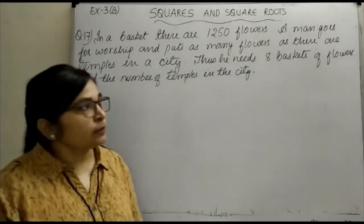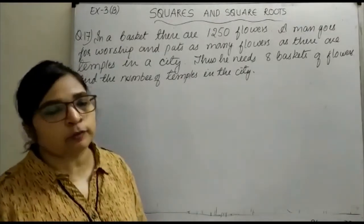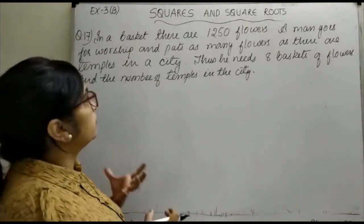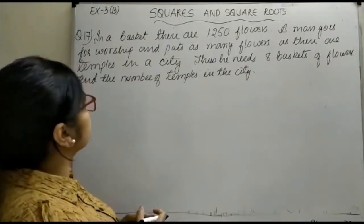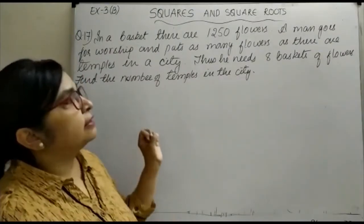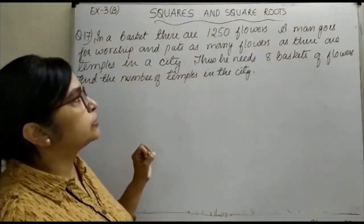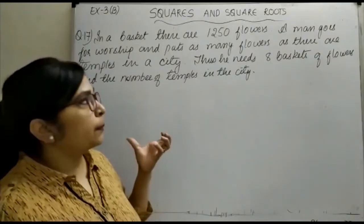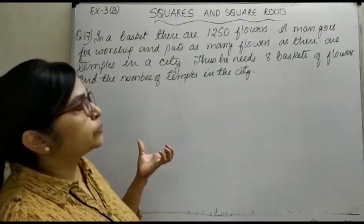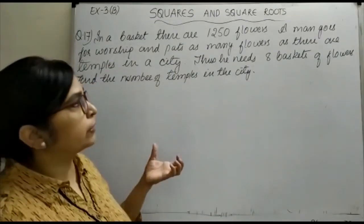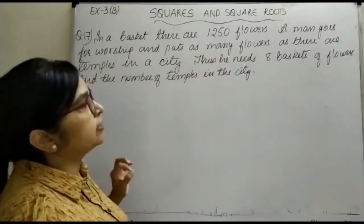Hello everyone, welcome to another session of Squares and Square Roots. Here we have to discuss one new question. The question says that in a basket there are 1250 flowers.